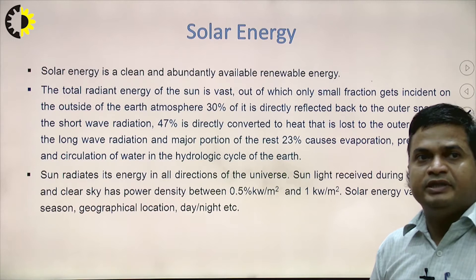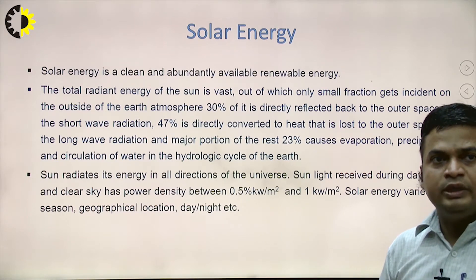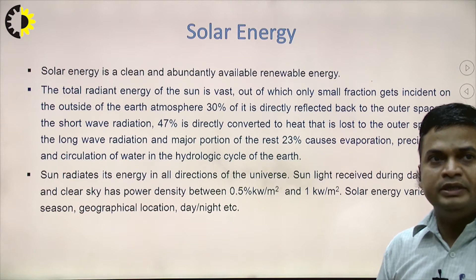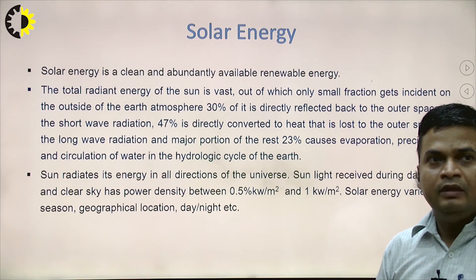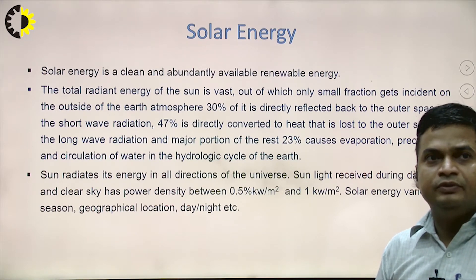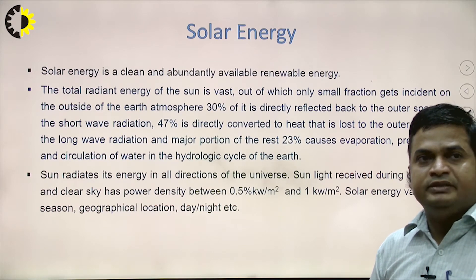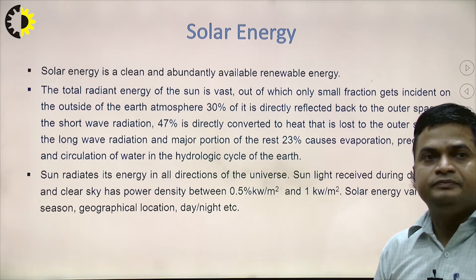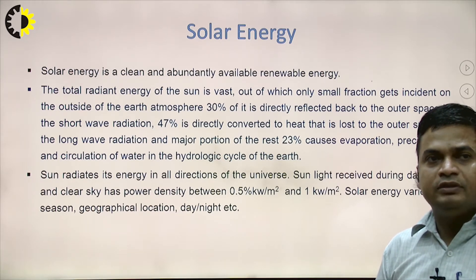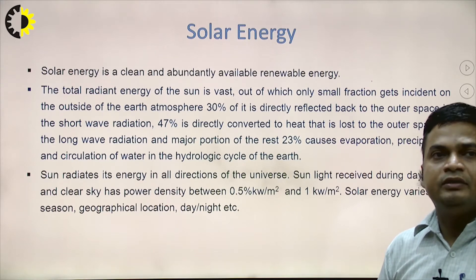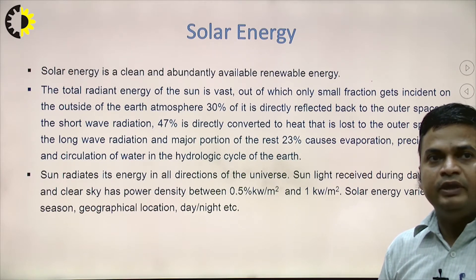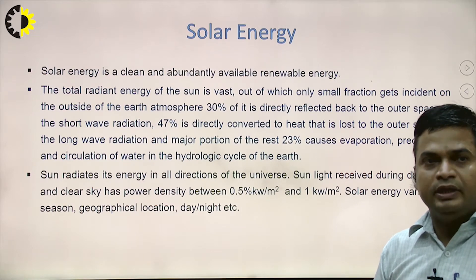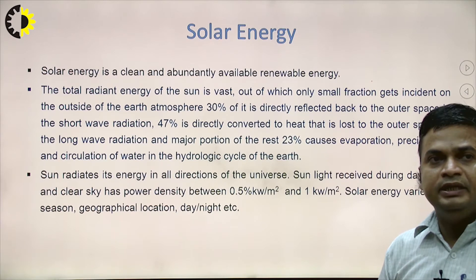First we will discuss about solar energy. Solar energy is the most important form of renewable energy, and most of the renewable energies are dependent upon solar energy. For example, when we talk about wind energy — how is wind produced? Wind is dependent upon the solar system because when solar radiations fall on the surface of the earth, the air close to the earth gets heated up and moves in an upward direction and is replaced by cold air.